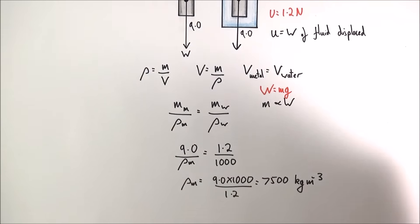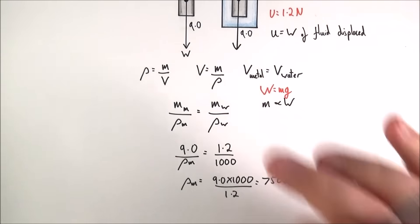I rearranged this to find the density of the metal, so 9000 over 1.2 to give the density being 7500 kilogram meters cubed. So that's the answer to 23b part 2 but you do not need to know that now, just ignore it, just completely focus on the exams that are coming up soon.